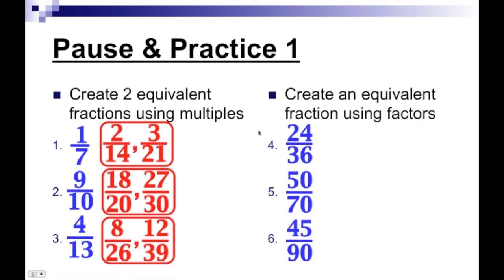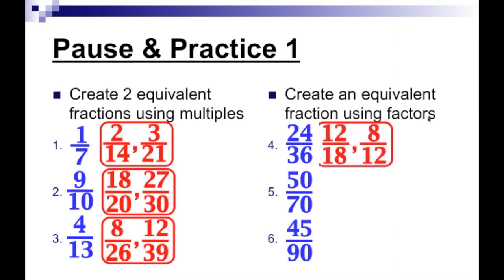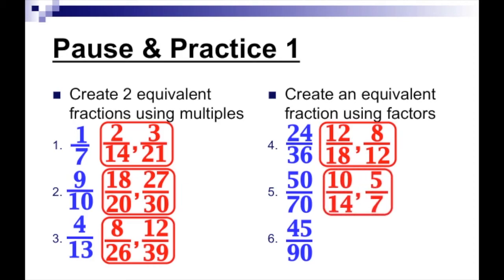For numbers four, five, and six, remember we're using factors — dividing the numerator and the denominator by the same number. For number four, we can get twelve over eighteen and eight over twelve. For number five, ten over fourteen or five over seven. And for number six, nine over eighteen or three over six.